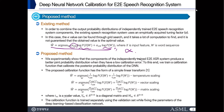So our proposed method is using the calibration function composed in this paper. We experiment to show that components of the independently trained E2E system produce a better joint probability distribution when they have a low calibration error. We train the calibration function using three methods: temperature scaling, vector scaling, and matrix scaling.